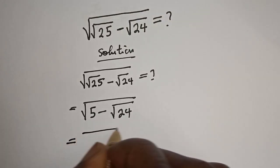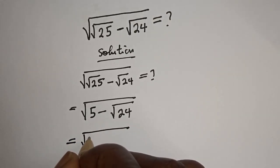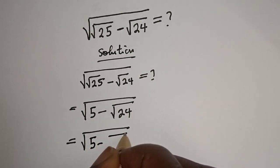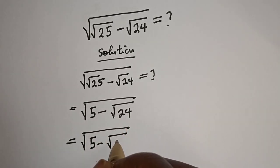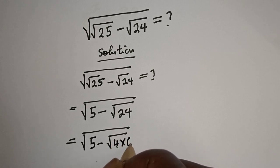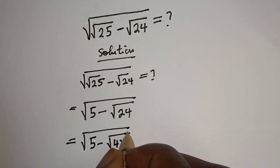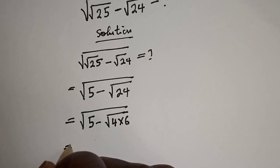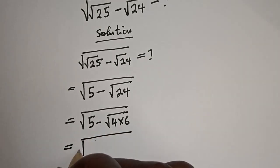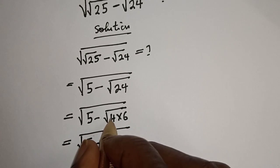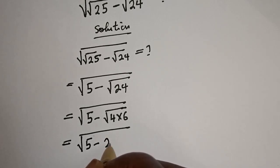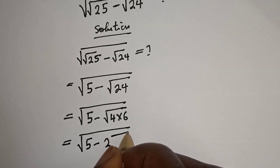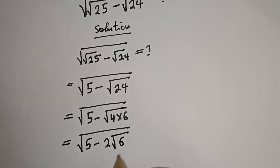This is equal to square root of 5 minus — square root of 24 can be written as 4 multiplied by 6 — equal to square root of 5 minus square root of 4, which is 2, times square root of 6.